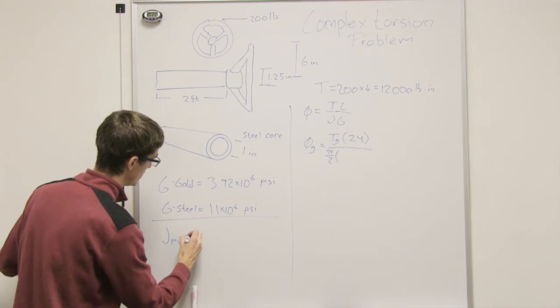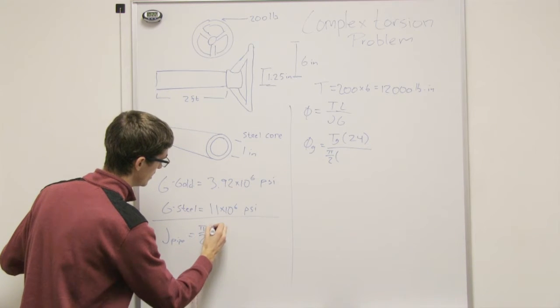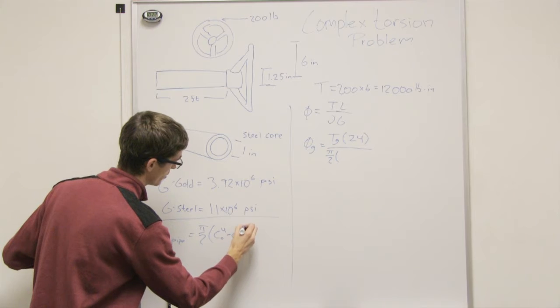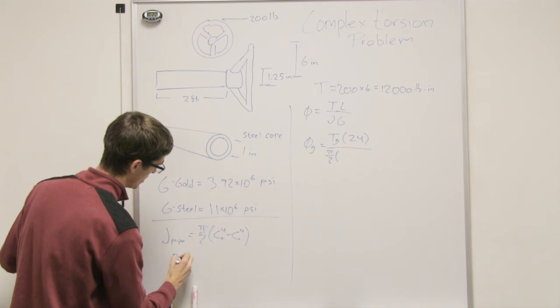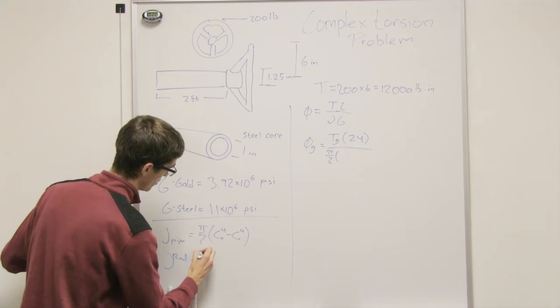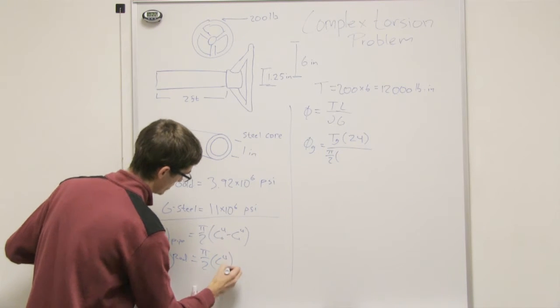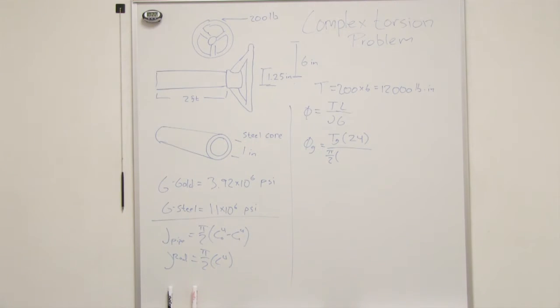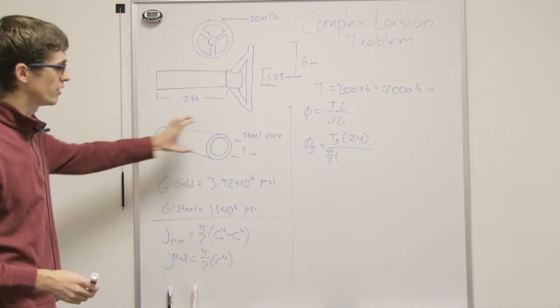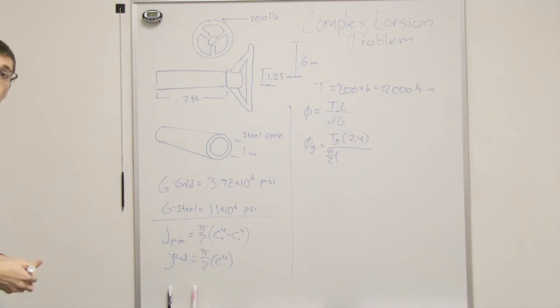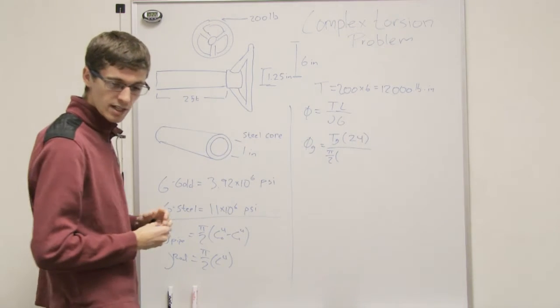J for the pipe is equal to pi over two times C to the fourth, C outer to the fourth, minus C inner to the fourth. While for the rod, is equal to pi over two times C to the fourth, just C to the fourth. So we'll use both of those today, because we have both the pipe plating and the rod, that's the rod core, so we'll use both of those.